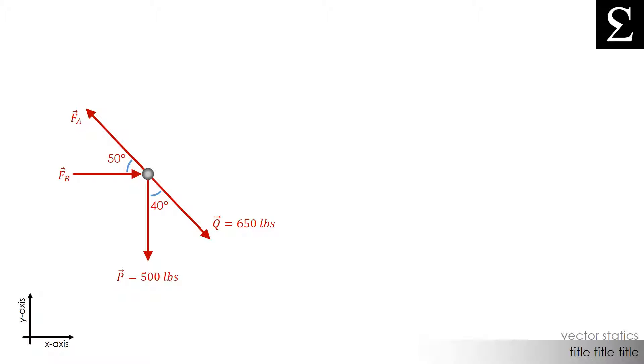Here we have four forces that are acting on our little gray dot. Force P is 500 pounds acting down and force Q is 650 pounds acting down and to the right.